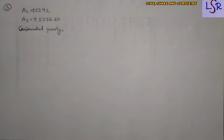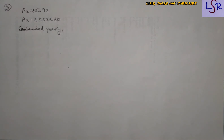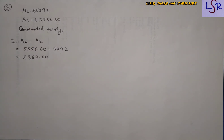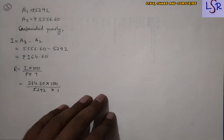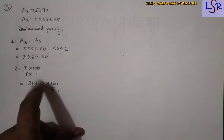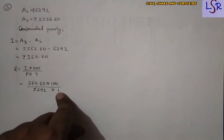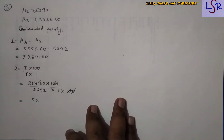In question number three, a certain sum amounts to rupees 5292 in two years and rupees 5556.60 in three years, interest being compounded annually. We have to find the rate of interest and the original sum. First, we find the difference of the two amounts: 5556.60 − 5292 = 264.60. Using the rate formula with principal = 5292 and time = one year, we solve and get 5% as the rate.